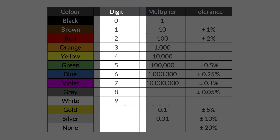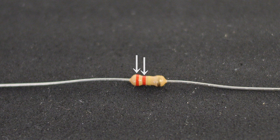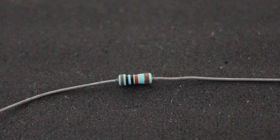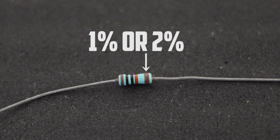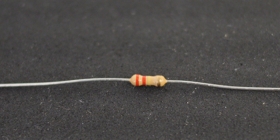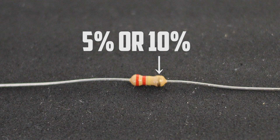Gold and silver follow. We can use this chart to determine the digit, multiplier, or tolerance that the color band represents. Resistors can have a varying number of bands on them. We'll focus on 4 and 5 band resistors as they are the most common. On a 4 band resistor, the first two stripes are combined together to form a number between 1 and 99. The third stripe is the multiplier, and the last marks the tolerance. On a 5 band resistor, the first three stripes get read as a single number, while the fourth stripe is the multiplier and the fifth band represents the tolerance. Most 5 band resistors are precision resistors with tolerances of 1% or 2% indicated by a brown or red band on the far right.